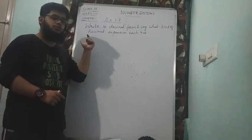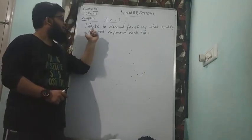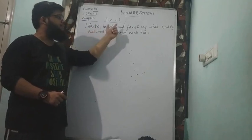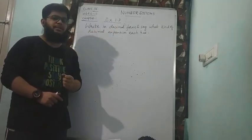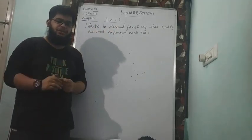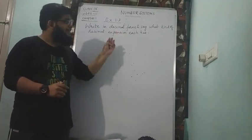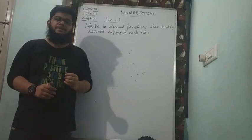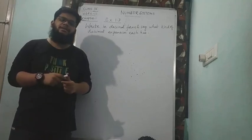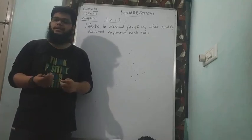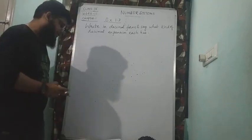So in today's video we will have to see what we are doing. We will be given some questions in P by Q or fraction form. We have to write it in decimal form by dividing it. Then we have to say what type of decimal expansion it has, whether it is terminating, non-terminating, or recurring. So let us go with our first question.